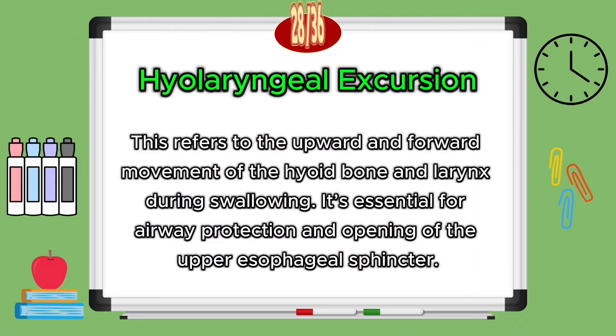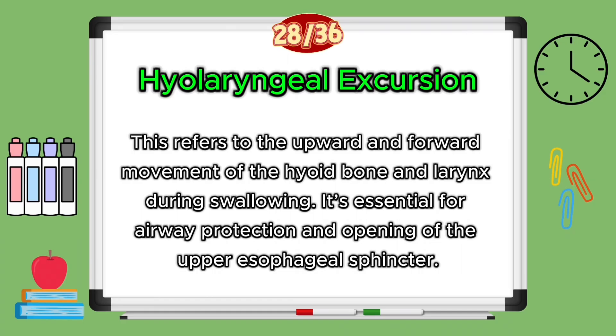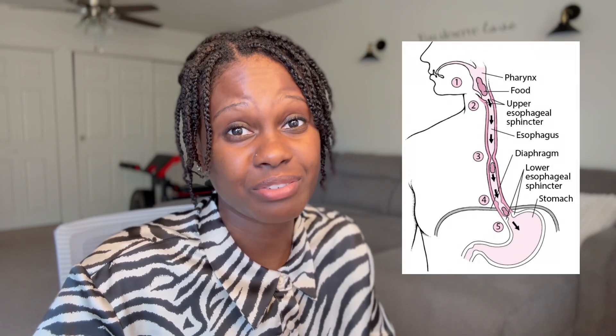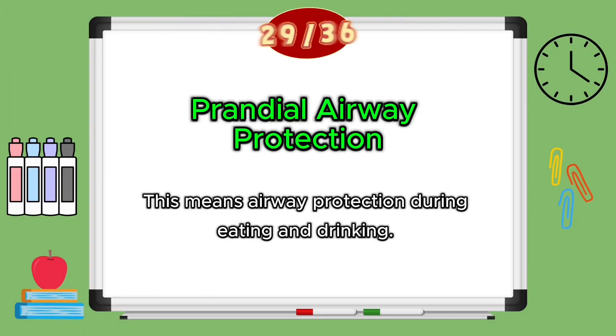Hyolaryngeal excursion and elevation refers to the upward and forward movement of the hyoid bone and larynx during swallowing. It's essential for airway protection and opening of the upper esophageal sphincter — also abbreviated as UES — which is a band of tissue that helps open the esophagus. Prandial airway protection means airway protection during eating and drinking; prandial simply means during a meal.